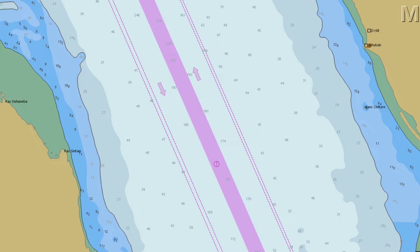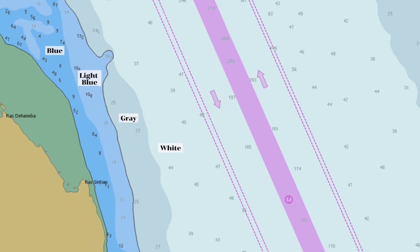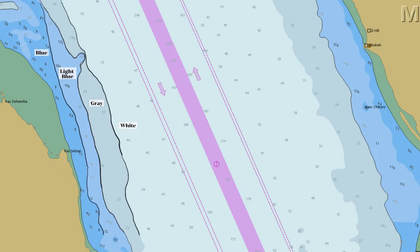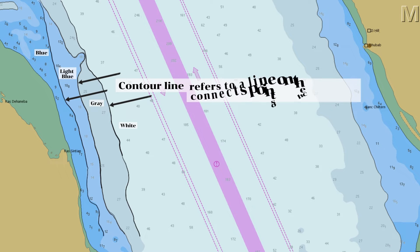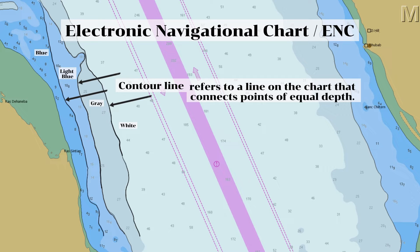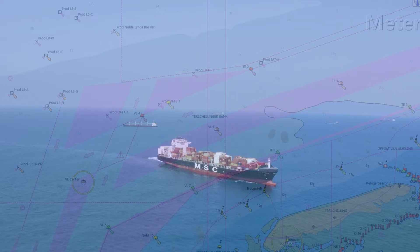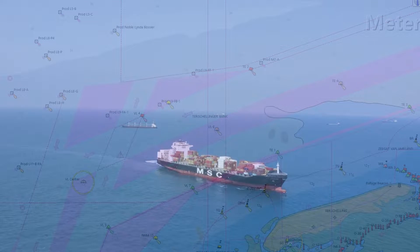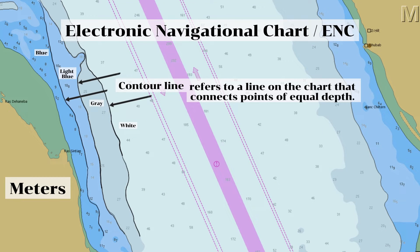As you can see in this ENC chart, the water is divided into four shades: blue, light blue, gray, and white. In between different shades, it is separated by a line that we call a contour line. A contour line refers to a line on the chart that connects points of equal depth. The electronic navigational chart displays these contour lines digitally to assist mariners in navigation and route planning, helping navigators identify areas of different depths and navigate safely through waterways. The depth sounding shown in this ENC is in meters, and the contour lines show equal depth in meters.